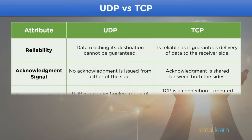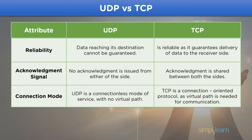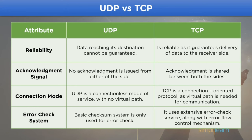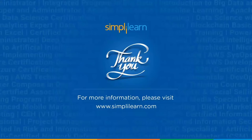The next attribute is connection mode: UDP is a connectionless mode of service with no virtual path established for data transmission, whereas TCP is a connection-oriented protocol requiring a virtual path for data to be transmitted to the destination. The next attribute is error checking: UDP uses only a basic check system for error checking, whereas TCP provides an extensive error check service along with flow control mechanisms.